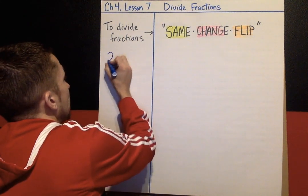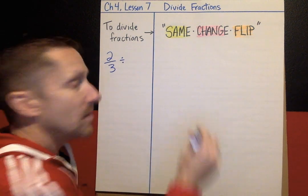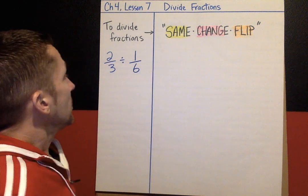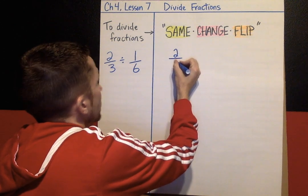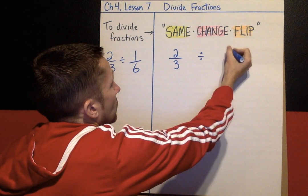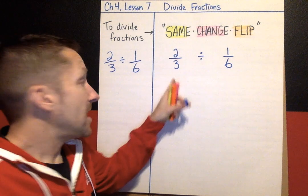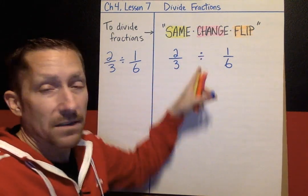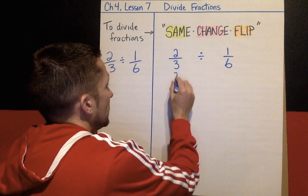Here's an example of what that strategy means. If you are trying to divide 2/3 divided by 1/6, the first fraction stays the same. So let's put our problem right here: 2/3 divided by 1/6. This fraction stays exactly the same — nothing happens to it. Change means dividing gets changed to multiplying.